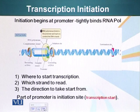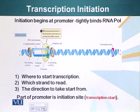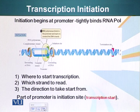Transcription initiation begins at the promoter. The promoter is a sequence of nucleotides that has specific functions. One of those functions is that it can bind RNA polymerase — the molecule that will make the RNA — and it binds to a specific region of DNA. Next to the promoter are genes whose RNA will be used to make proteins.